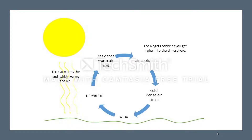What do you understand by the term convection? Does it remind you of convection currents? These are nothing but transfer of heat energy from one place to another. Convection currents take place in the atmosphere. As you can see in the picture here, the sun heats the land surface making the surrounding air warmer, and warm air rises and reaches the troposphere, which is comparatively cooler. The cool air again sinks back to the earth due to gravity.